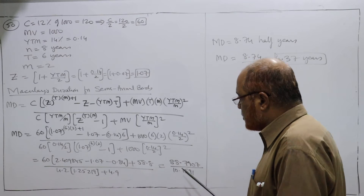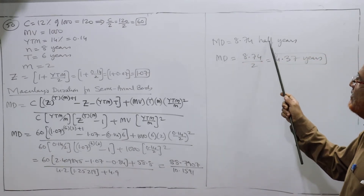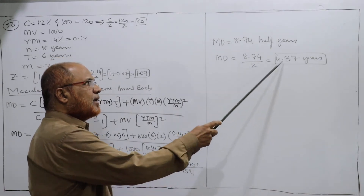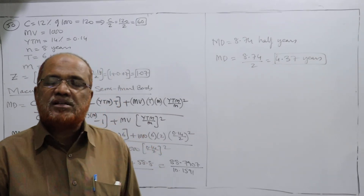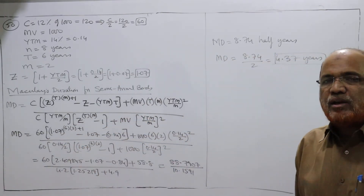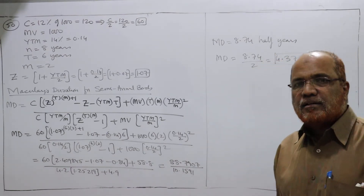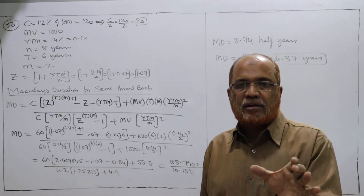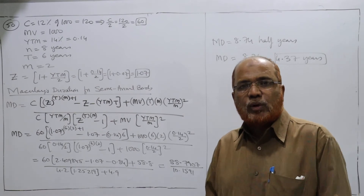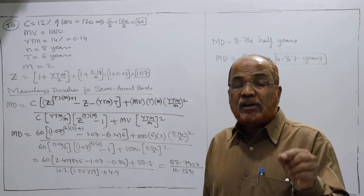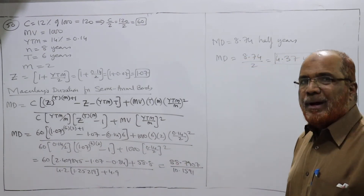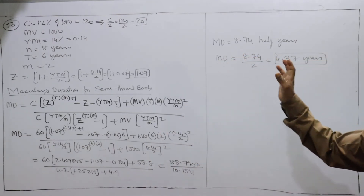Solving the formula, we get Macaulay's duration of 8.74 half-years. Since we are getting the result in half-years, we divide by 2: 8.74 divided by 2 equals 4.37 years. So Macaulay's duration is 4.37 years. This formula is applied only when semi-annual interest payments are made. For annual payments, we can use the tabular method, which is simpler. For semi-annual bonds, we must apply this formula.